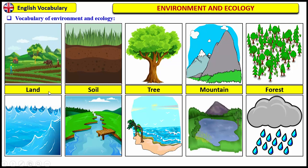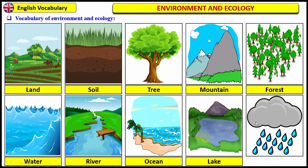First of all, we have water, river, ocean, lake, rain. Repeat after me: water, river, ocean, lake, rain.